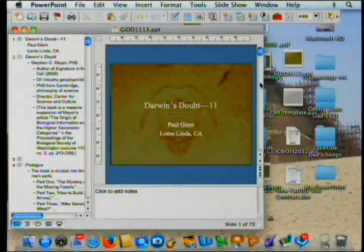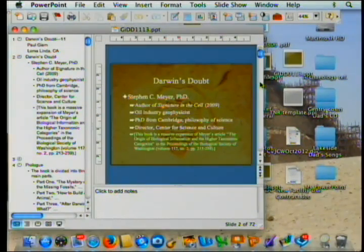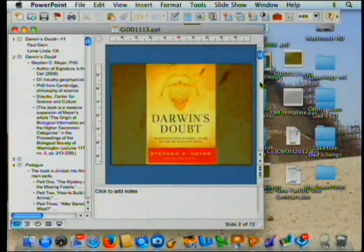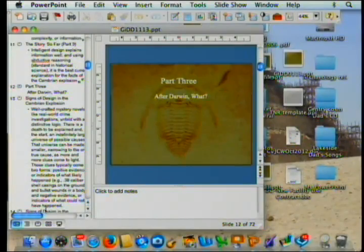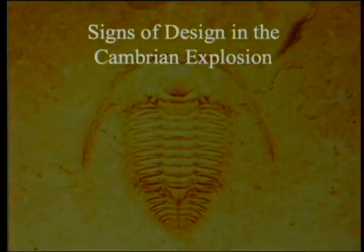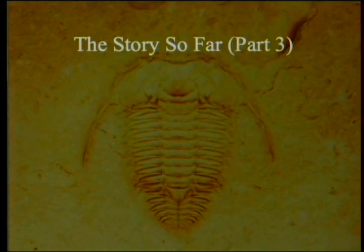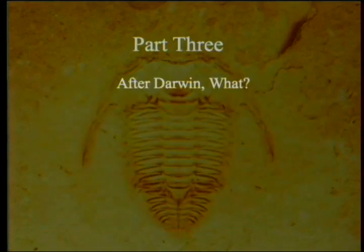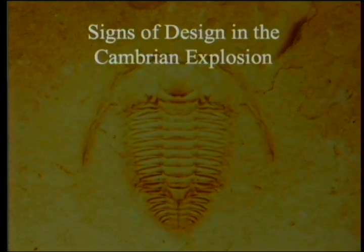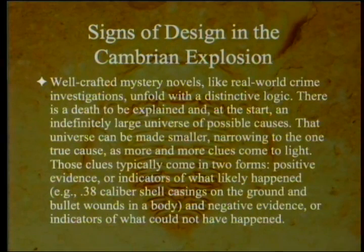We're on chapter 18. Intelligent design explains information well, and using abductive reasoning standard in historical science, it is the best current explanation for the facts of the Cambrian explosion. We're now in Part 3, and we're ready to do signs of design in the Cambrian explosion.